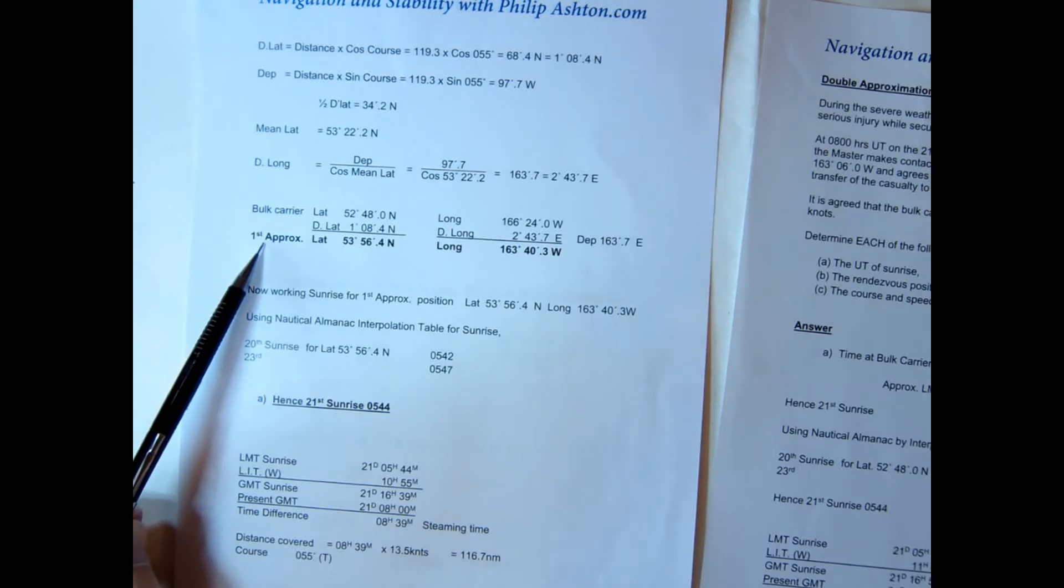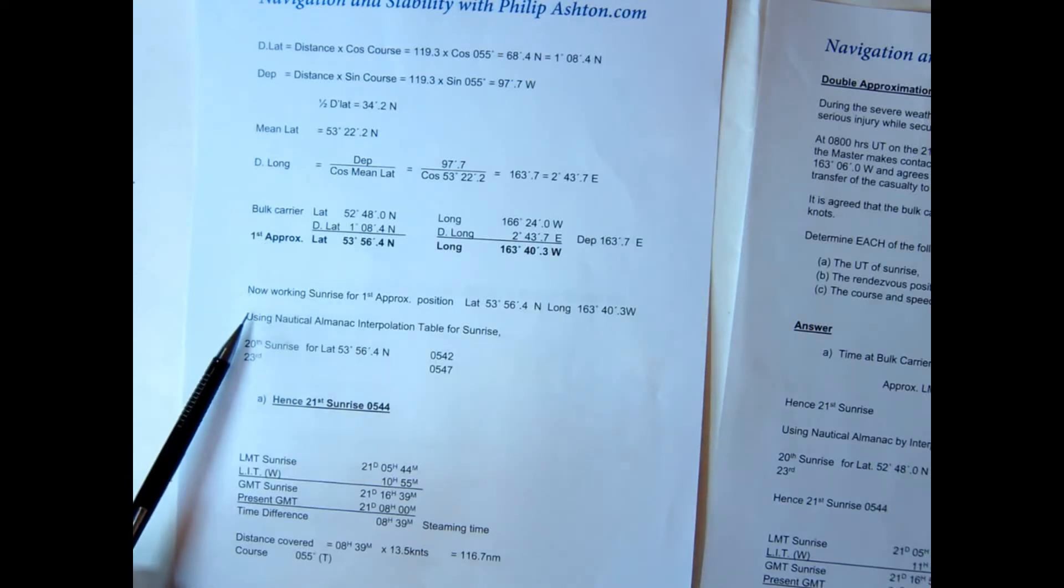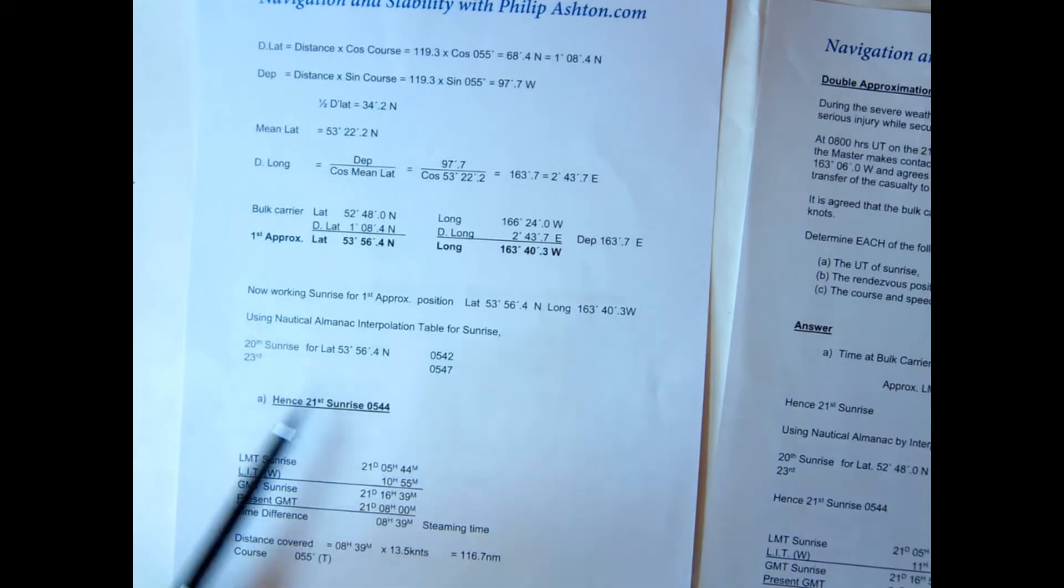What we now do is work out a new time of sunrise using this first approximate position. Again we're going to the Mark on the 20th and the 23rd as previous, 0542 and 0547. So that doesn't change, it's still 0544. But what will change potentially is the steaming time because of our longitude. Now the previous longitude time was 11 hours and now it's 10 hours 55.